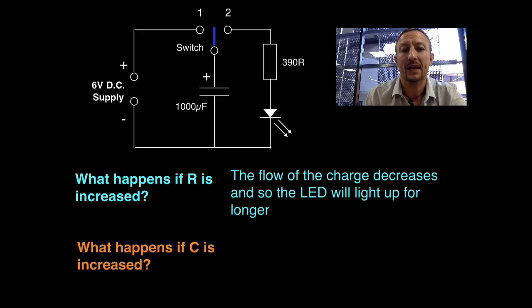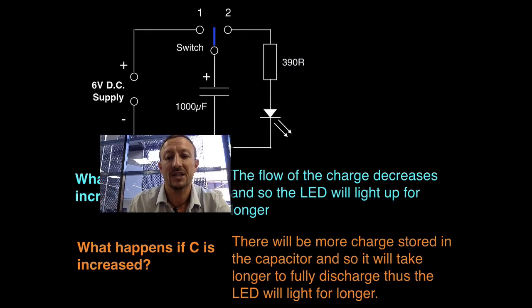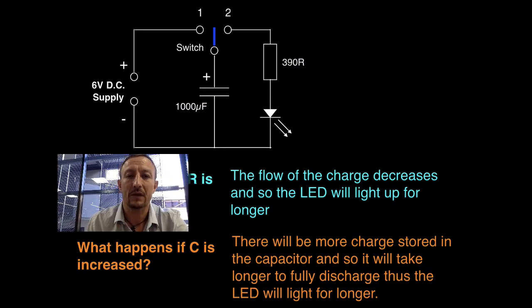Now also what happens if we increase the capacitance? If we increase the capacitance, basically what that means is we make the capacitor bigger. We make the water barrel bigger. If we have the bigger water barrel with the same resistor, although we've got the same hole, we've got a lot more charge which has been stored. So as a result, the capacitor will take longer to fully discharge, and again, the LED will light for longer.